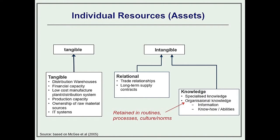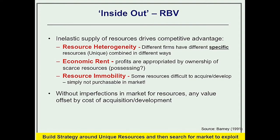Now only some resources can provide competitive advantage. They have to be different from what other firms have; otherwise all firms can do the same things. So perhaps we might call them strategic assets. The resources that will give competitive advantage fit three definitions. Firstly, resource heterogeneity — economists' way of saying they're different: specific resources that the firm has that others don't. Also those resources have to generate an economic rent, so in their ownership the firm gains a profit from those scarce resources — customers come to that firm for what it can do as a result of having those resources.